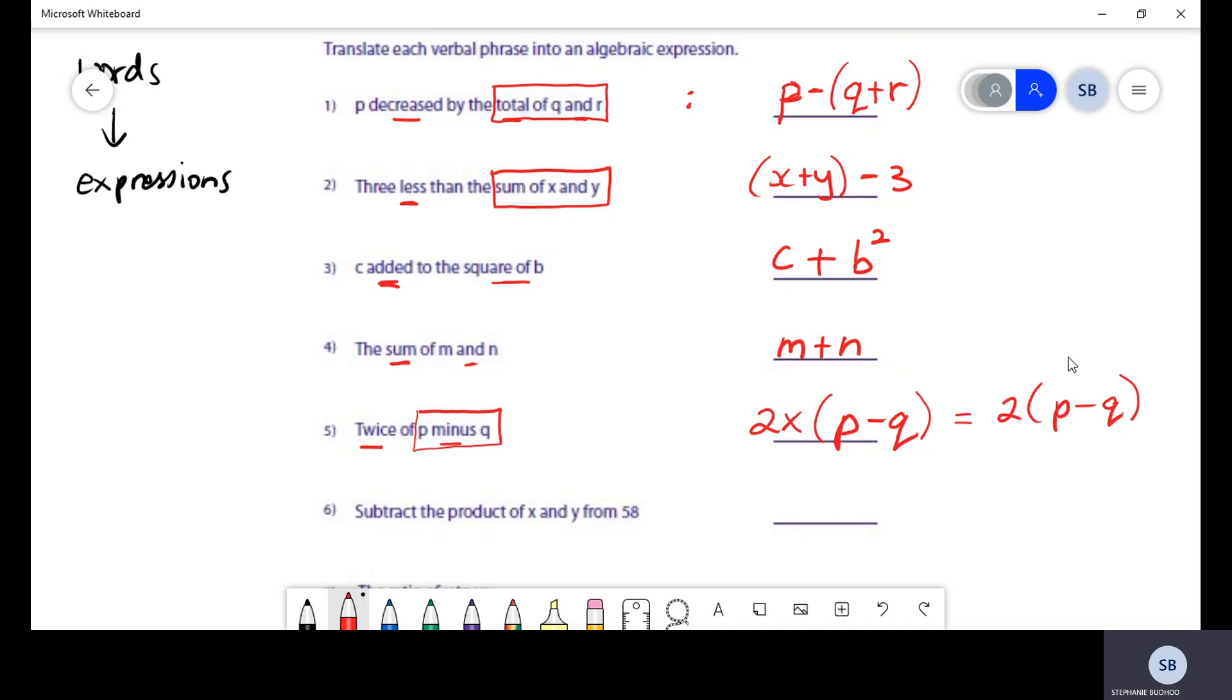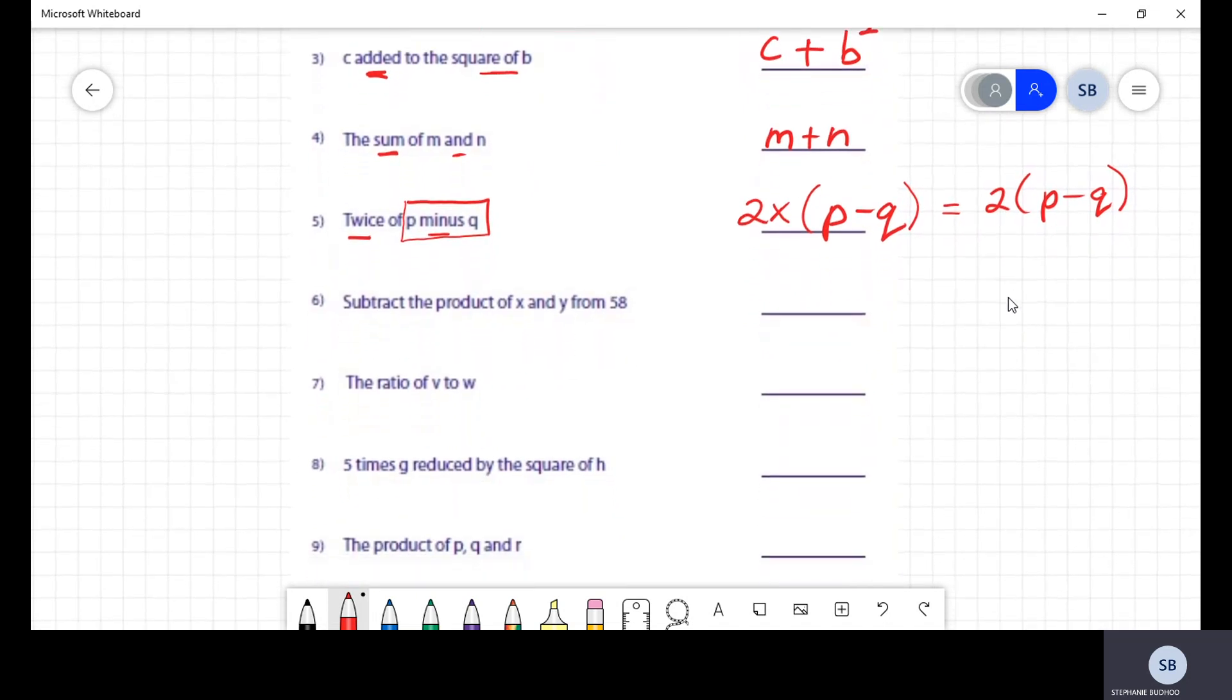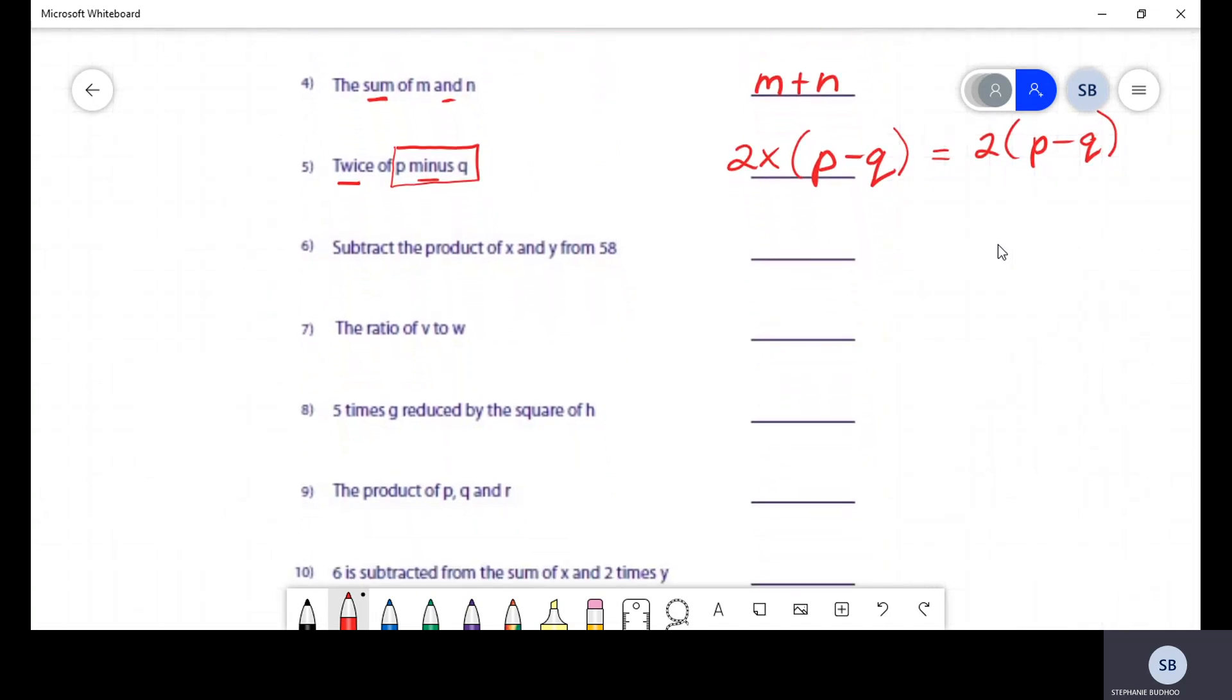Next question, it looks a bit longer than the others but nonetheless let's go ahead. They say subtract the product of - what we're going to subtract the product of some things - subtract the product of x and y. So we are going to find the product of x and y, which is simply x multiplied by y. And you all know x multiplied by y is xy. And they want us to subtract this from 58, so 58 minus xy. The product of x and y is being subtracted from 58.